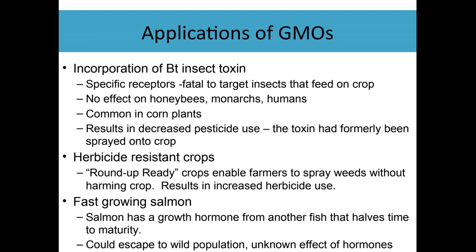In animals, an example has been this fast-growing salmon. They've taken a growth hormone from a fish that grows much faster, and the salmon grows faster this way. For farmed salmon, this enables them to get more salmon in a short amount of time. A danger of this is that it could potentially escape to a wild population if that salmon breeds with other fish.